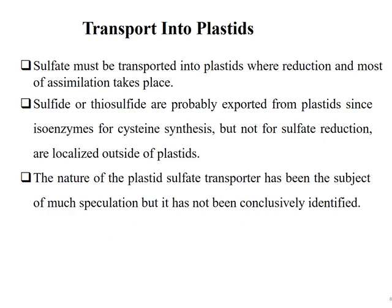For transport into plastids, sulfate must be transported into plastids where reduction and most assimilation takes place. Sulfide or thiosulfate are probably exported from plastids, since isoenzymes for cysteine synthesis but not for sulfate reduction are localized outside plastids. The nature of the plastid sulfate transporters has been the subject of much speculation but has not been conclusively identified; these transporters remain speculative and not yet well understood.